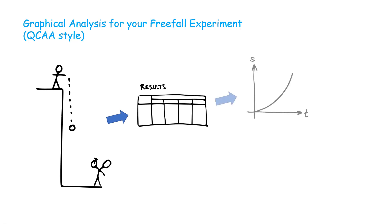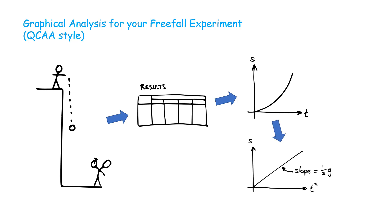Then the next step is we graph that data, and we get a displacement time graph. Now, the displacement time graph, if our data is good, will be parabolic. A parabolic graph is quite difficult to analyze — more difficult than a linear graph anyway. So if we can linearize our data, that's much easier to confirm that the data matches a trend, it's much easier to see outliers, and then it can be used to calculate parameters from the graph. For example, with this data, we're going to use the slope of the linearized data to calculate g, the acceleration due to gravity.